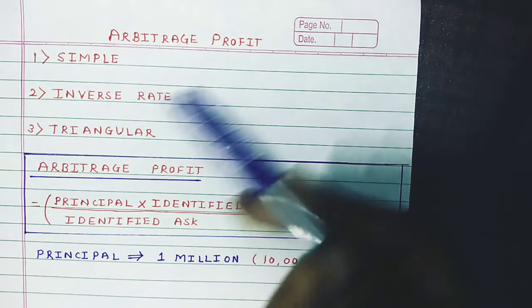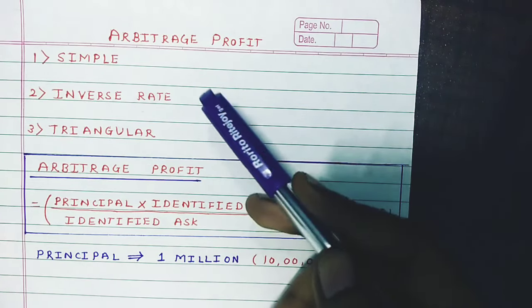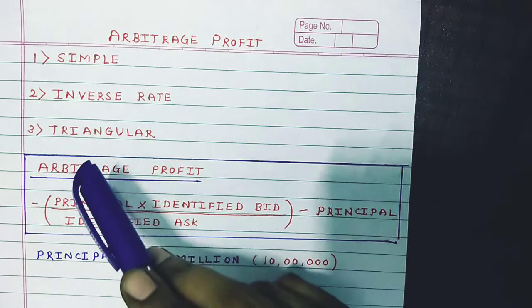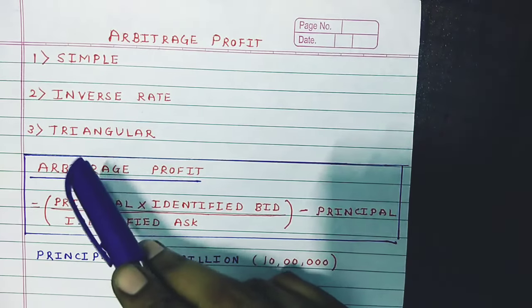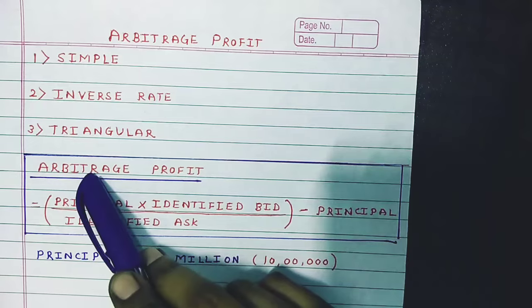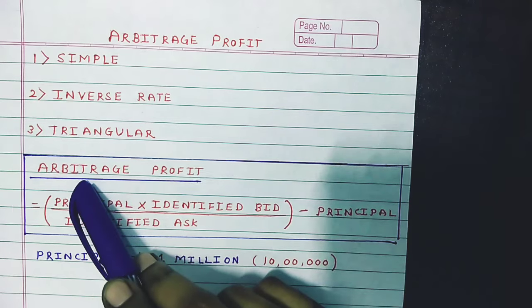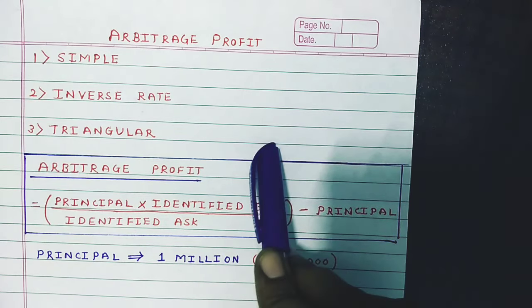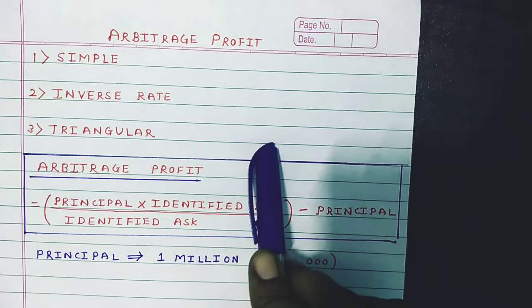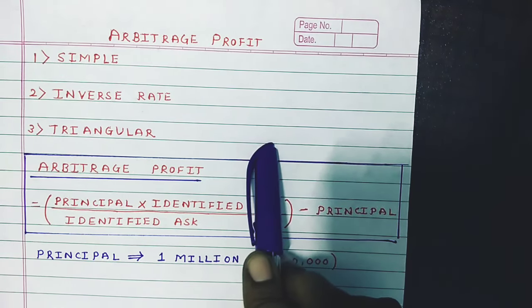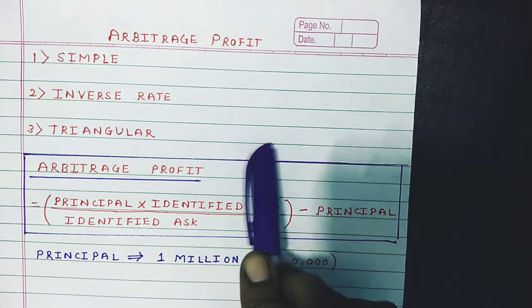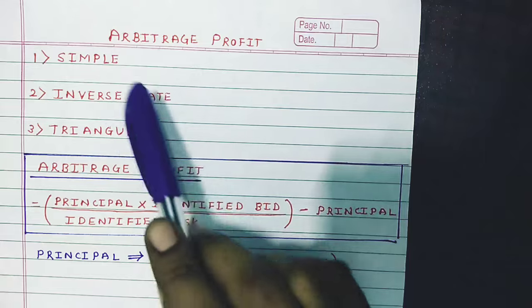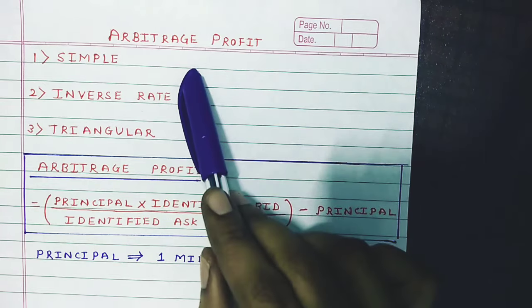What is the meaning of Arbitrage? Arbitrage means we are going to buy the currency from one market and we are going to sell the currency in another market. So that is nothing but Arbitrage.